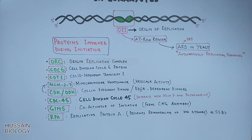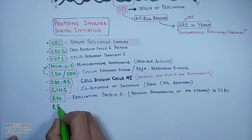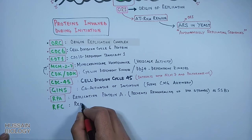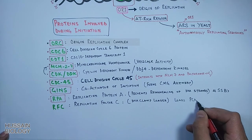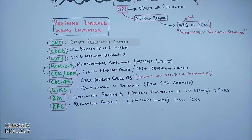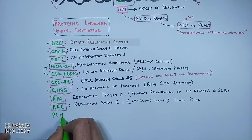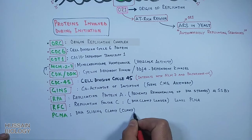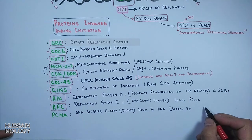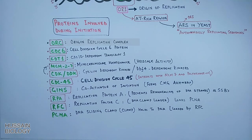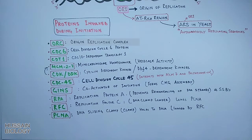Then we have rfc protein, replication factor C. It is a DNA clamp loader, it loads pcna to the DNA strands. Then ultimately we have pcna itself, a DNA clamp. It holds to DNA in a ring-like manner and with this, DNA polymerase does not get detached from the synthesis site.